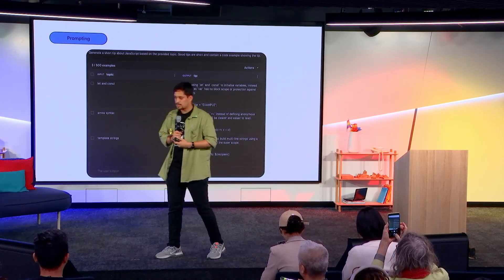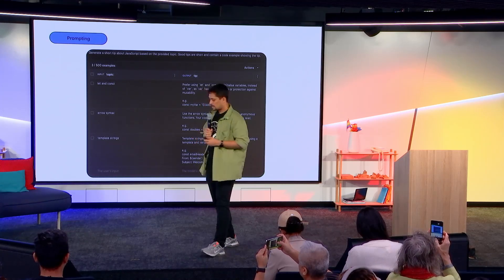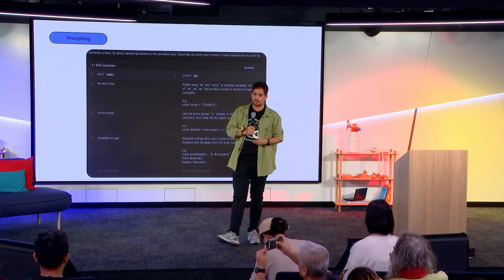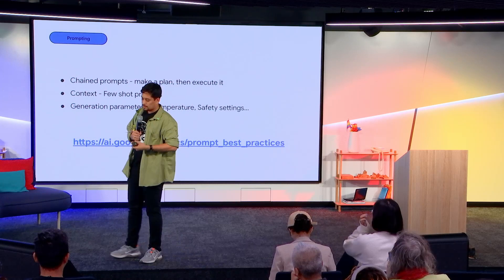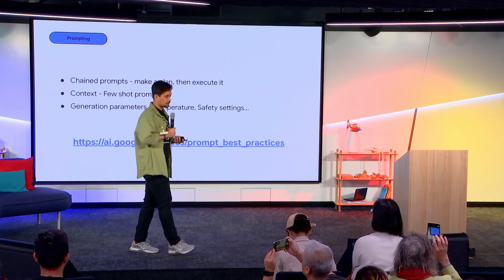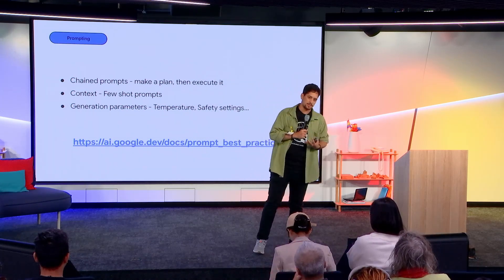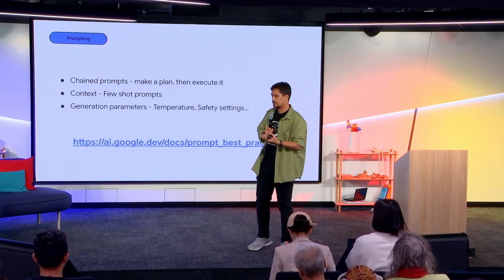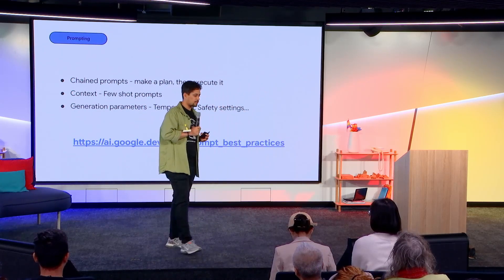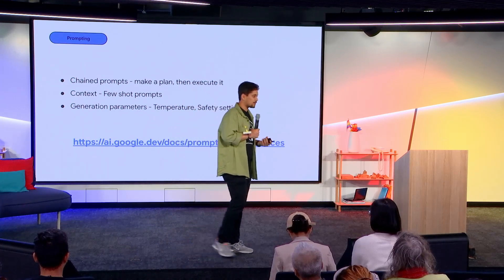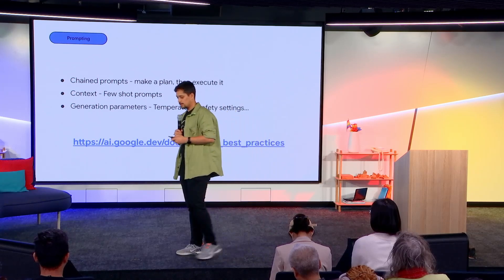As an example, this is what Gemini Studio returned after that one-shot prompt — it's giving me multiple tips about multiple features in JavaScript. The idea is you need to chain prompts, make a plan of how to execute those prompts, put as much context as possible in one single prompt, play around with temperature settings and safety settings, and there are other settings which, if you're an AI engineer, would make sense to you.